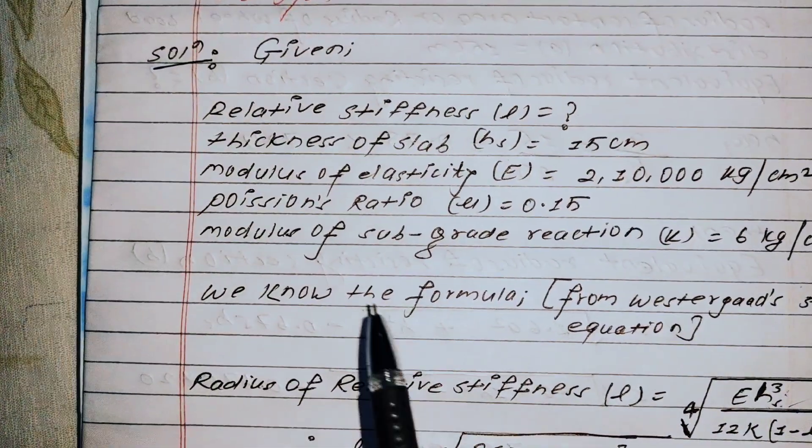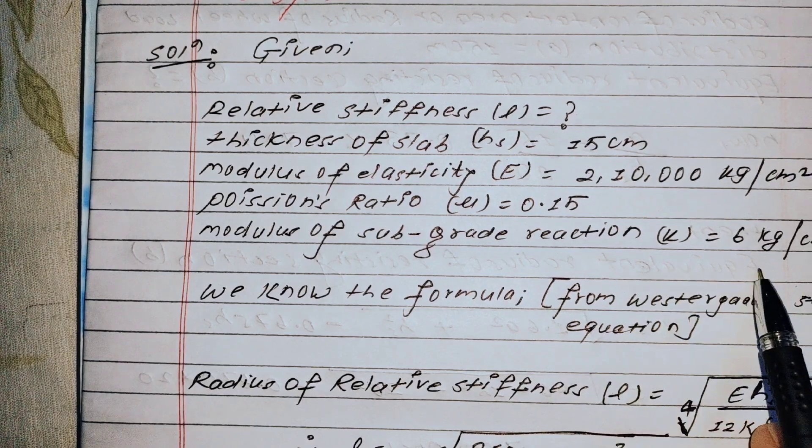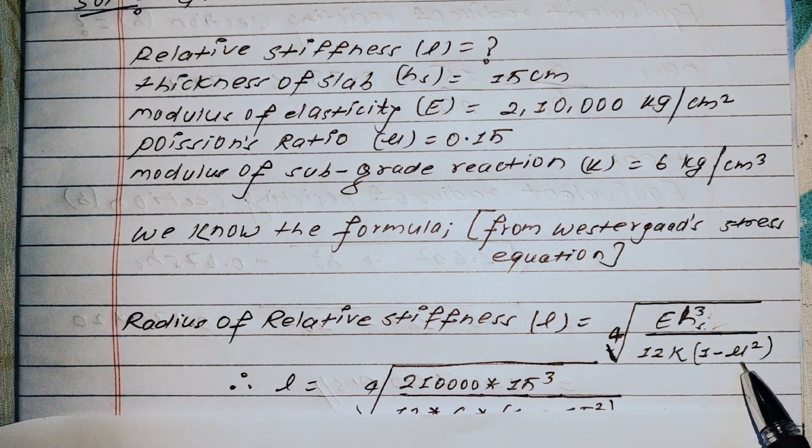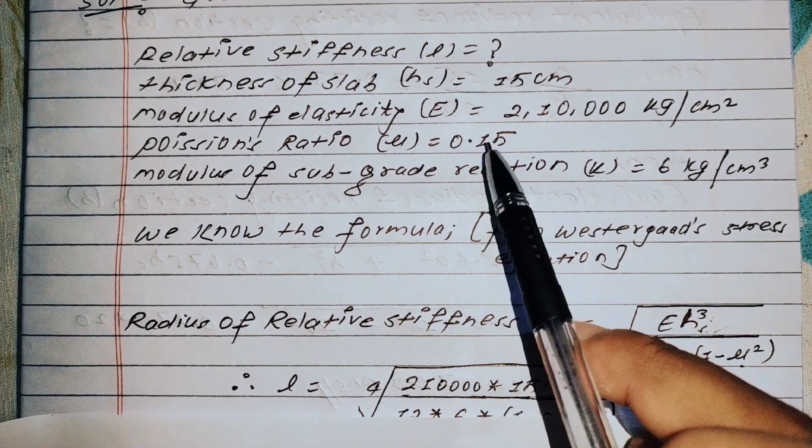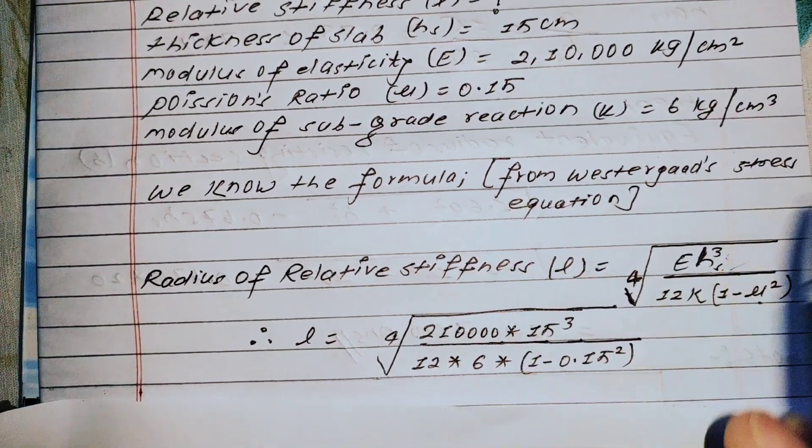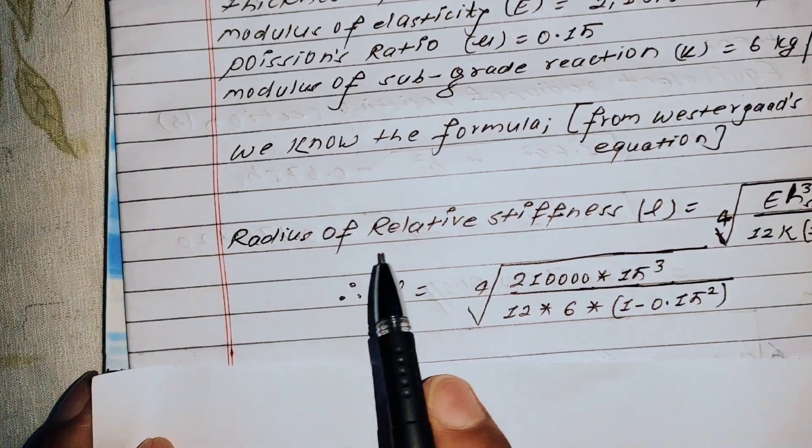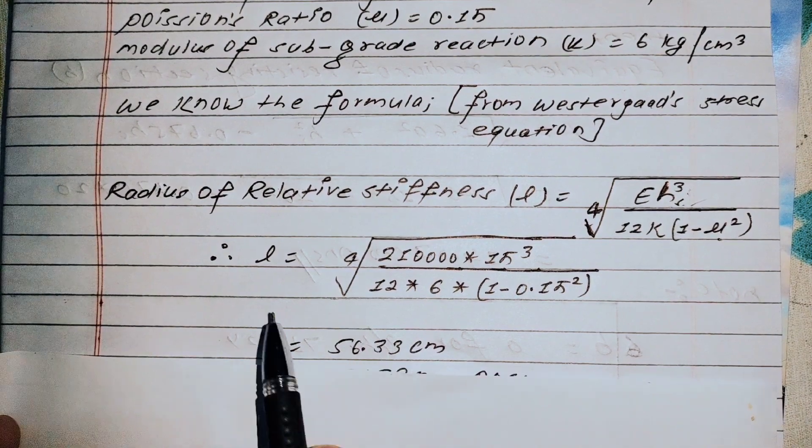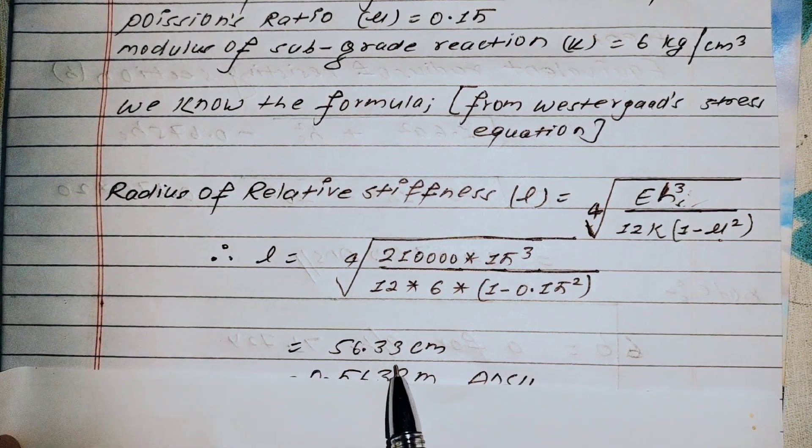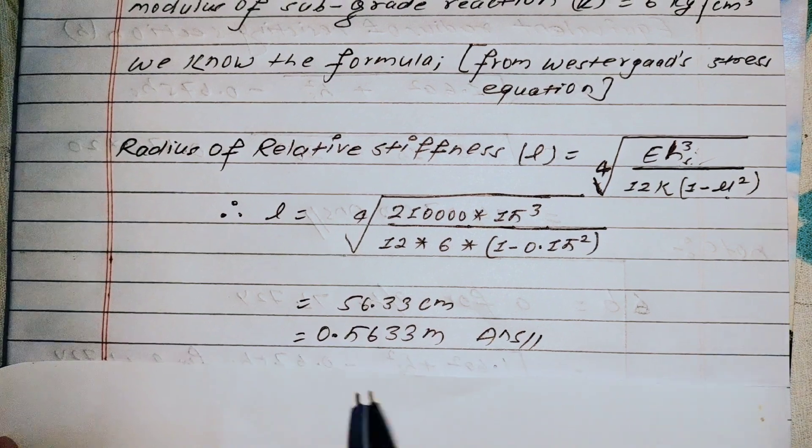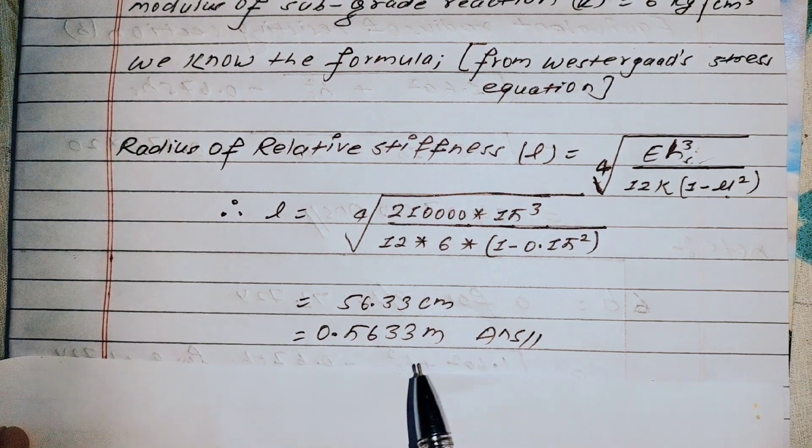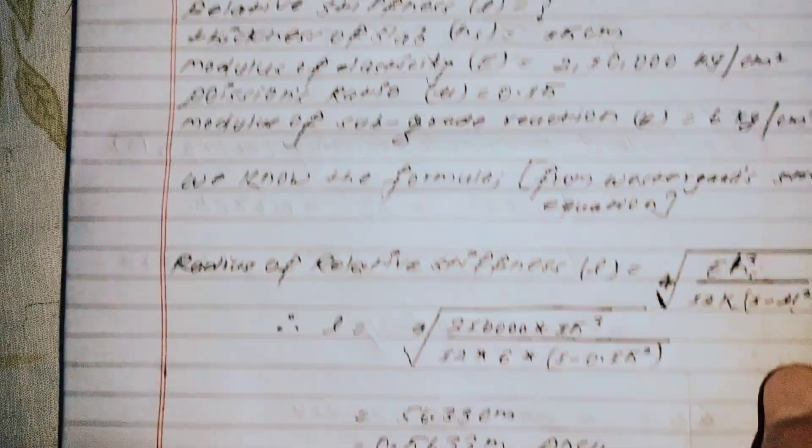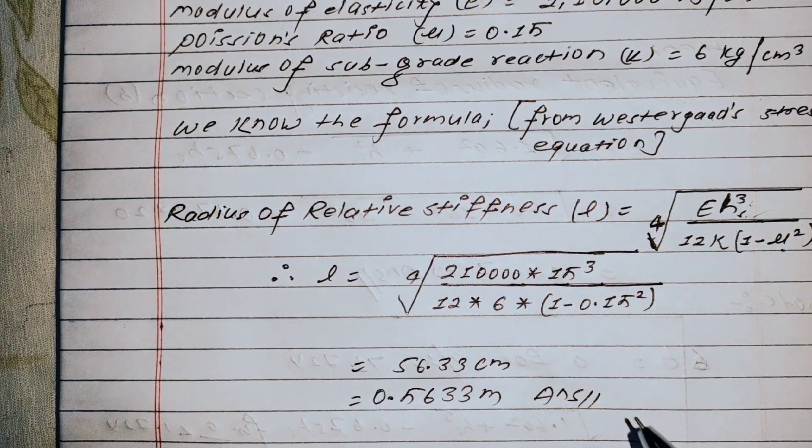K value is the modulus of subgrade reaction, which is 6 kg/cm³. The mu value is 0.15. When we put all these parameters into the equation, we get the radius of relative stiffness L = 56.33 centimeters or 0.5633 meters. This is how we calculate the radius of relative stiffness using this equation.